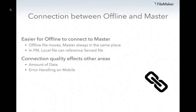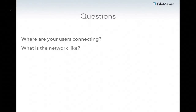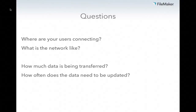The quality of your network really does affect how much data you can sync and any error handling you might have to build in. If you have a slow connection, you won't want to sync a lot of data. If your network is prone to being flaky, you'll need to build in nice error handling. The questions to ask are: where are your users connecting, what is the network like in those places, can you ask them to sync in specific places with better network, how much data is being transferred, and how often do they need to update the offline file?